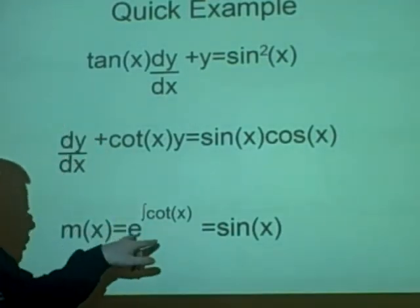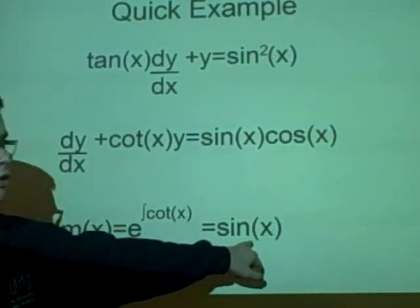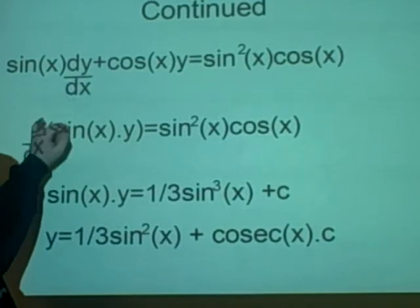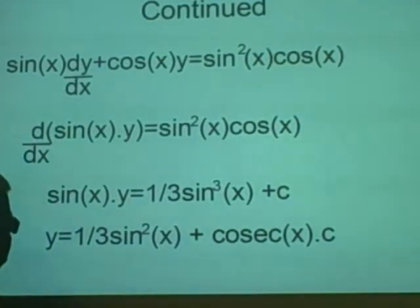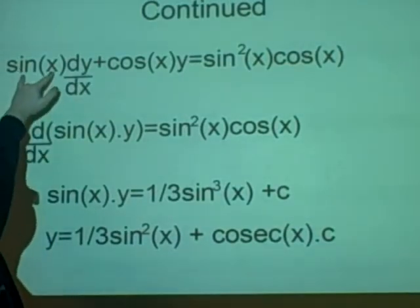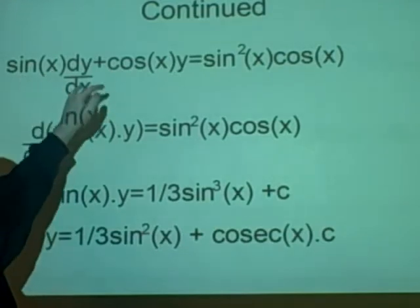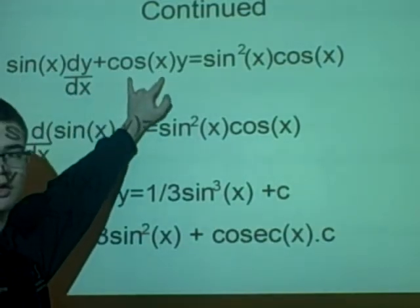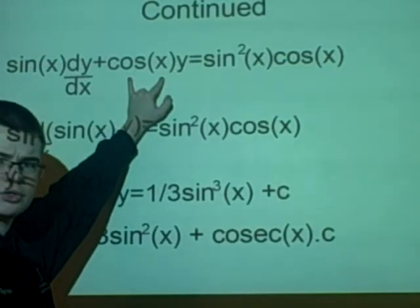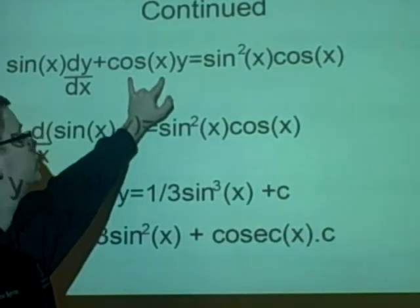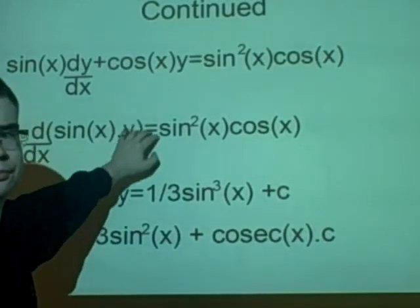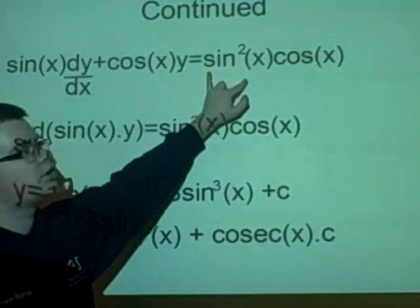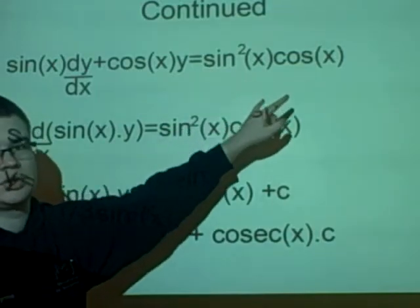Now what we want to do here is multiply everything by sin(x). So that will give us sin(x) dy/dx plus cos(x)y. That's because cos(x) times sin(x) over cos(x) is cos(x). And sin squared x cos(x).